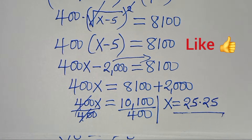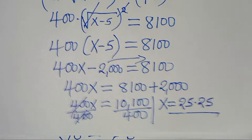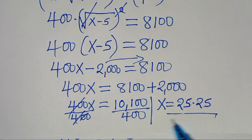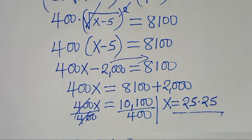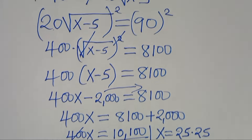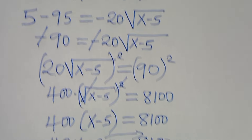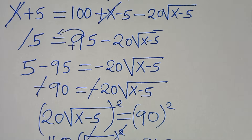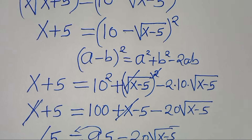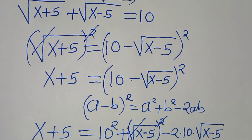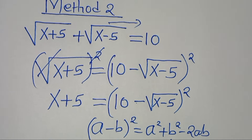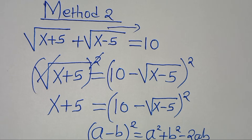Both Method 1 and Method 2 give the same result: x = 25.25. Kindly follow the steps, like this video and subscribe. See you in the next video. Bye bye for now.